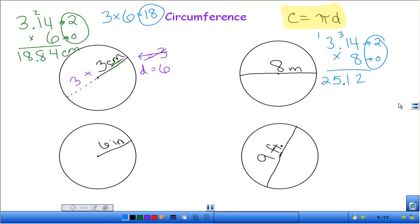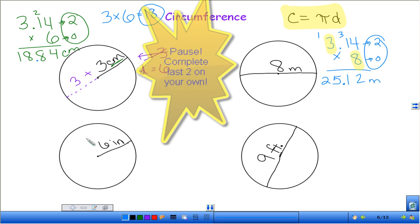Again, if we quickly estimate this, 3.14 is close to 3. 8 is a whole number. What's 3 times 8? 24. Is that close to our answer? Yeah. And then what unit am I going to put on the end of this? Miles. What is the M? Meters. Miles is MI. So this would be the distance around this circle, if the diameter is 8 meters, the distance around the circle is 25.12 meters. Questions so far? Okay, so go ahead and take a second and do these last two in your notebooks and then we'll go through them in just a minute.